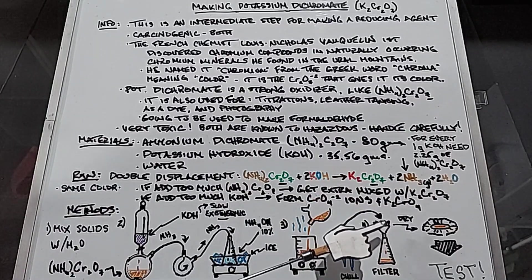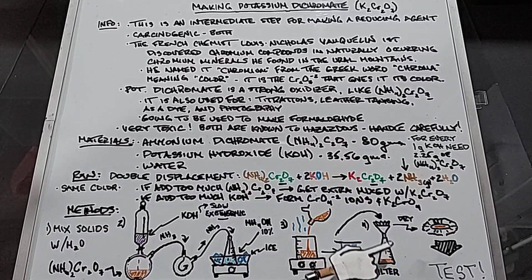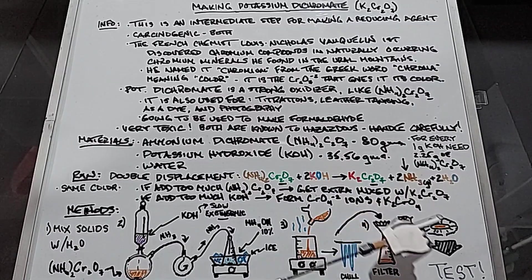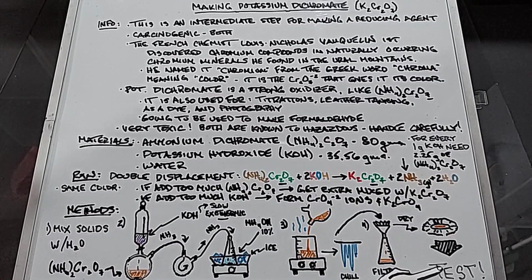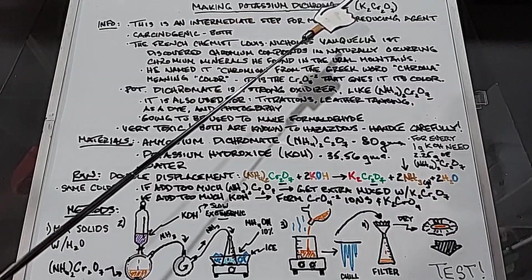Then we're just going to simply filter this. I don't know if I'll use just a gravity filter or suction filter yet, but either way, we'll take the crystals and dry them, and then we need to test them. That's because the potassium dichromate we make and the ammonium dichromate we started with are going to look exactly the same. So that's it, let's go make our potassium dichromate.